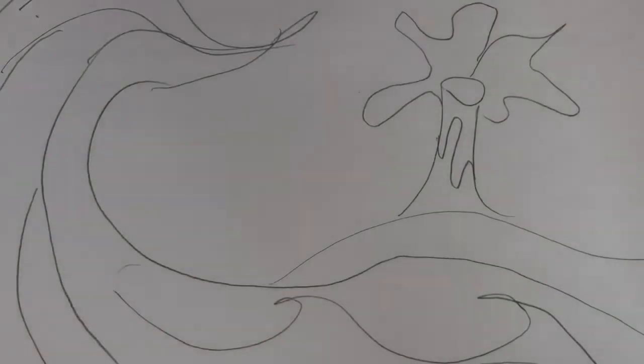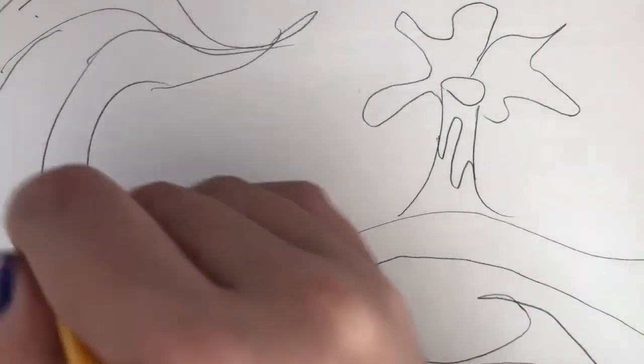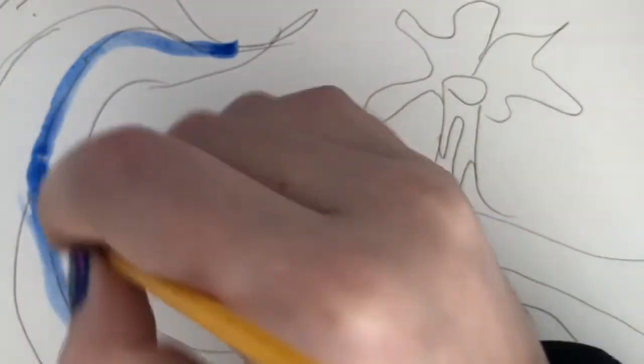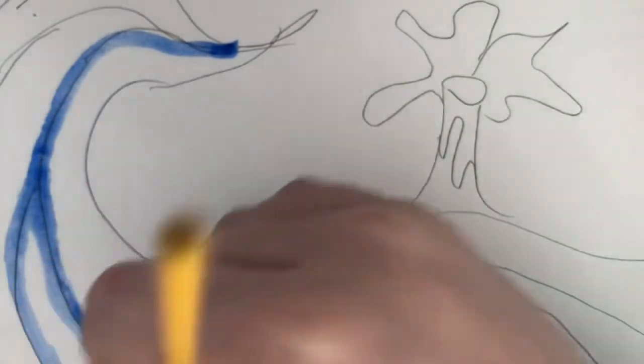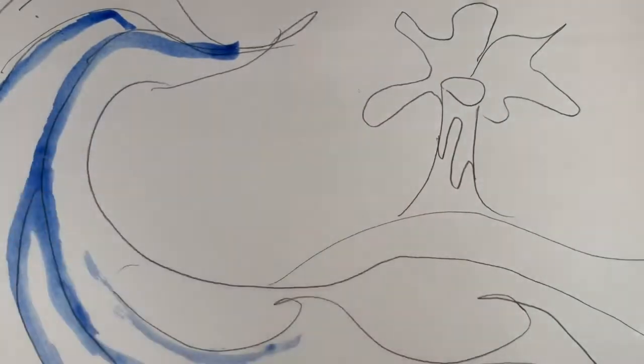Now the great wave is probably gonna be very blue, so I'm gonna be using a lot of blue paint. But I also have to think about what I'm gonna be using for the background. Is the sky gonna be blue as well or is it gonna be a sunset?